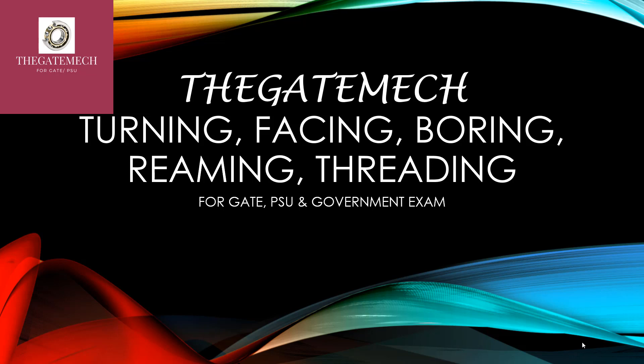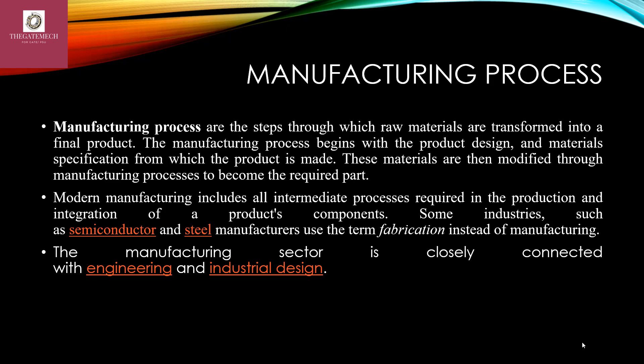Before discussing these topics, let's discuss manufacturing processes. Manufacturing processes are the steps through which raw materials are transformed into a final product. The manufacturing process begins with the product design and material specification. These materials are then transferred through manufacturing processes to become the required part, including all intermediate processes required in the production and integration of a product component.